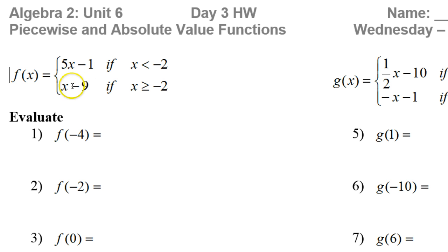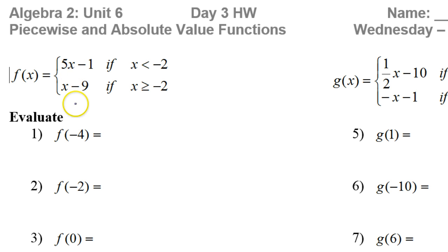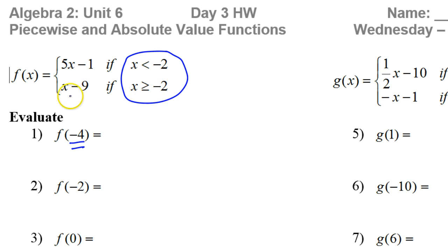A piecewise function has more than one part. Your first job is to decide which part you're going to use to evaluate the function. This condition tells us which part to use. If the x value you're evaluating at is less than negative 2, then we'll use the top function. If it's greater than or equal to negative 2, then we'll use the bottom part of the function.